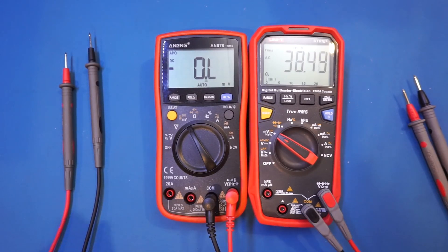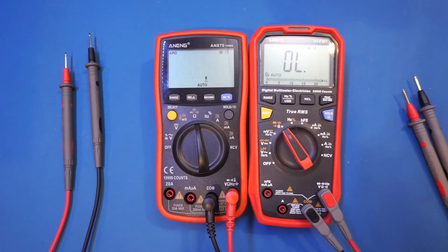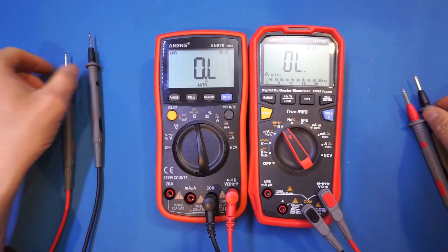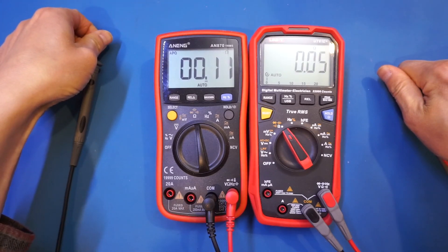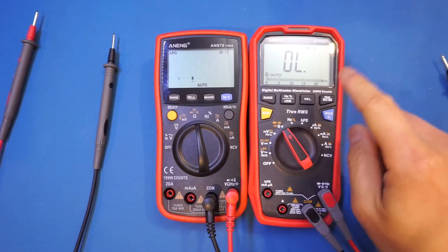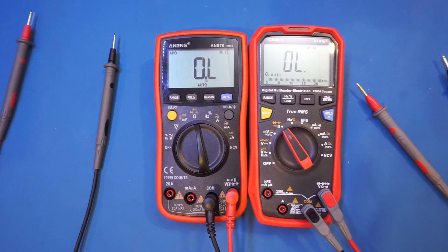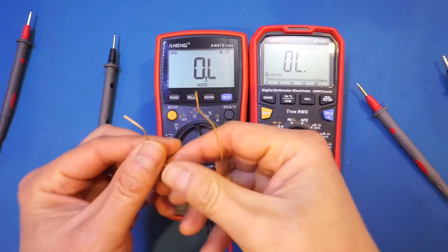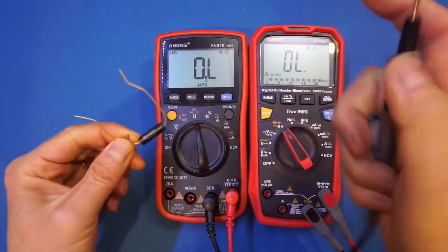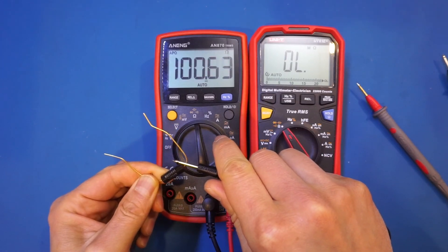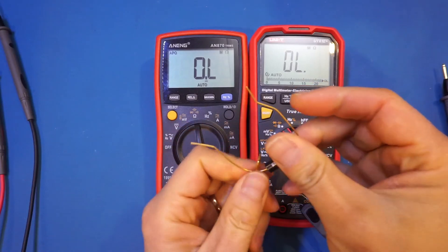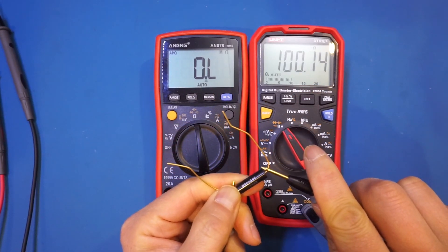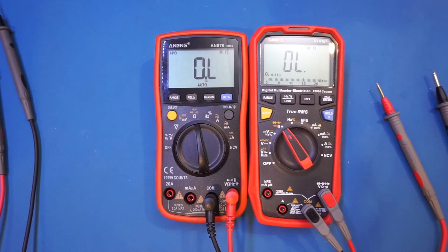Next, let's take a look at the resistance measurement mode. You'll notice how slow the AN870 is. Let's do it side by side, and I'm going to close the leads here. You can see that the AN870 is at least a couple of seconds slower than the measurement of the UT61E Plus. This becomes more evident in real-world measurement. You'll see that it takes quite a bit of time to measure this 100 ohm resistor, whereas for the UT61E, you see that it's almost instantaneous. In my opinion, the fast resistance measurement of the UT61E Plus is a clear winner here.